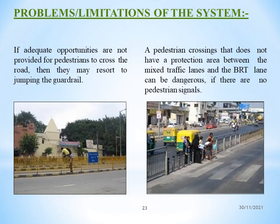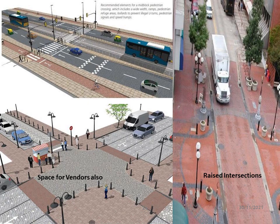Problems and limitations of the system include: if adequate opportunities are not provided for pedestrians to cross the road, they may resort to jumping the guardrail. A pedestrian crossing that does not have a protection area between the mixed traffic lanes and the BRT lane can be dangerous if there are no pedestrian signals. As seen in the pictures, raised intersections and spaces for vendors are also shown.